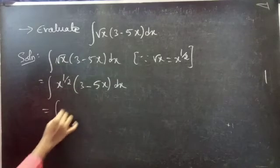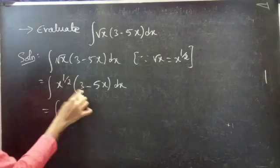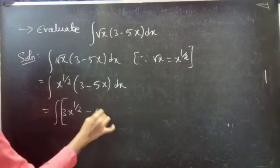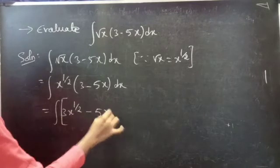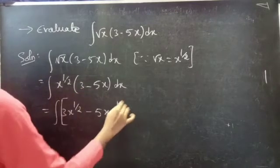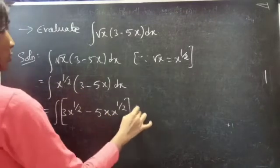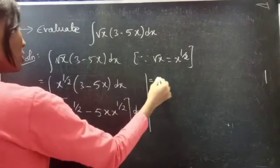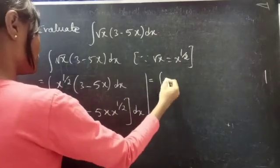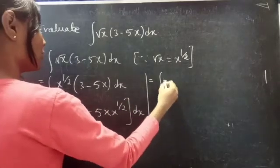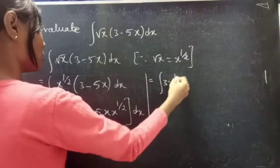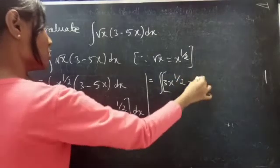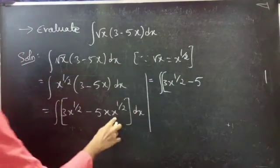This equals to the integral of 3 into x to the power 1 by 2, minus 5 into x into x to the power 1 by 2, dx. This equals to the integral of 3x to the power 1 by 2 minus 5 into — here, bases are equal.